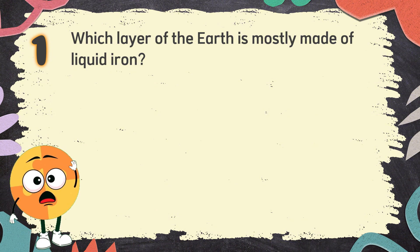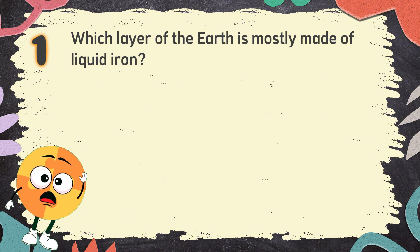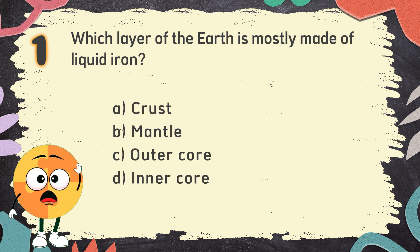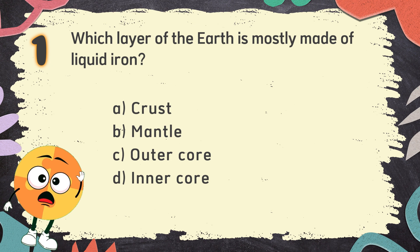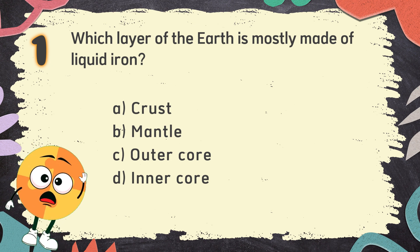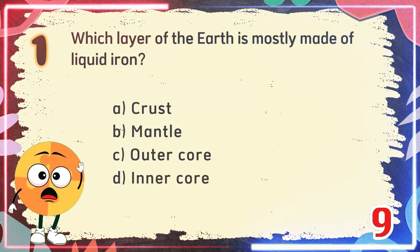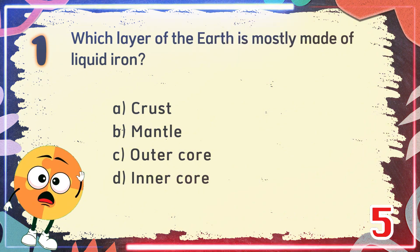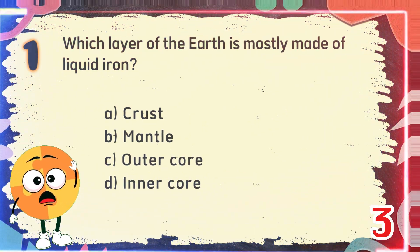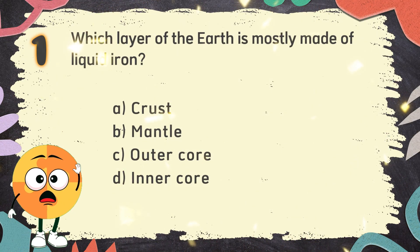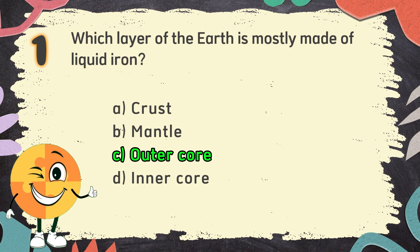Number 1. Which layer of the Earth is mostly made of liquid iron? The choices are: A. Crust, B. Mantle, C. Outer Core, D. Inner Core. The correct answer is C. Outer Core.